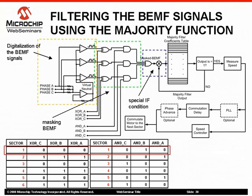The active masked back EMF signal is then filtered using the majority function filter. This filter is implemented with an array compounded by 64 values and a special logic test condition that is used to modify the pointer to the next data array.